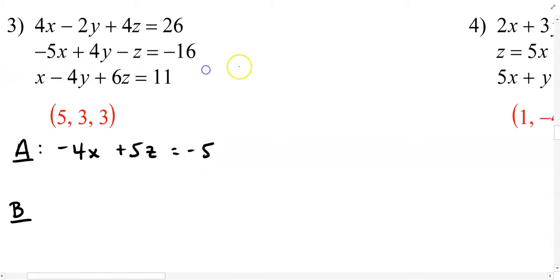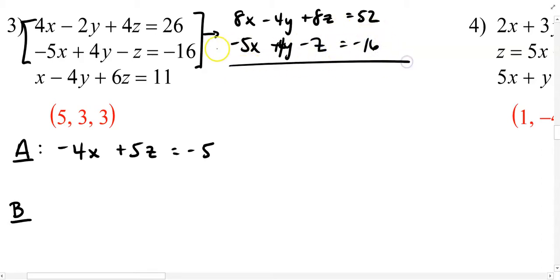Now I'll do the same with the first two equations, and it is important to choose two different equations. Now it could be the outer two equations, or the top and the bottom row, if you'd like to use that, but I notice that the top two can combine here fairly easily. I just have to double this top row. So I'm going to call this one 8x minus 4y plus 8z equals 52.